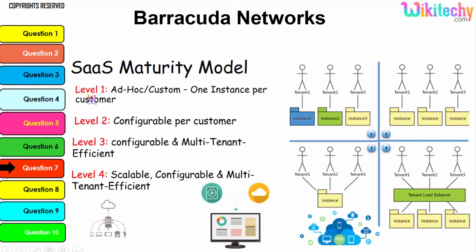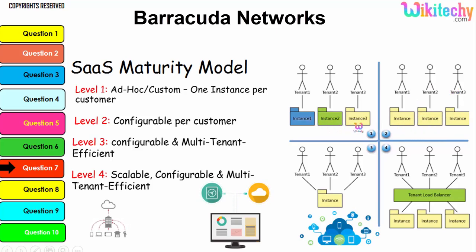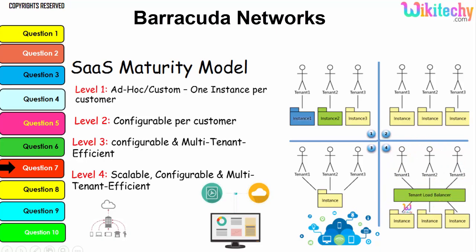You can see level one here — one instance per customer — and level two is configurable per customer, shown in a different color with multiple instances. Level three is configurable with multi-tenant architecture, where you have a load balancer and a scalable, configurable, multi-tenant setup. This is your cloud computing network environment.